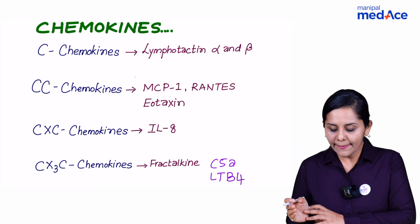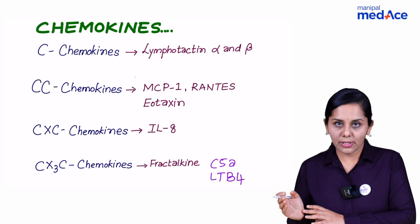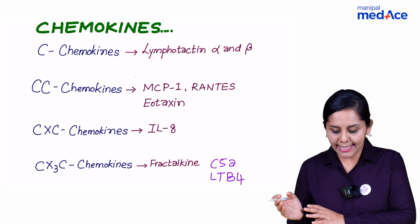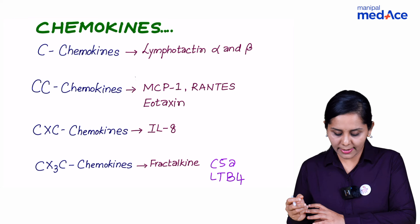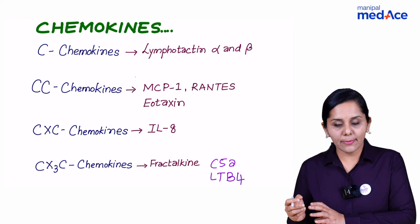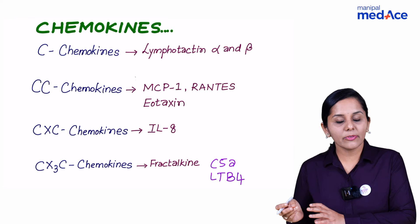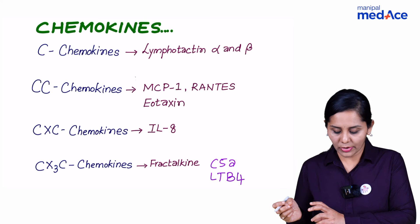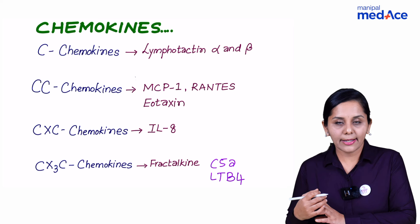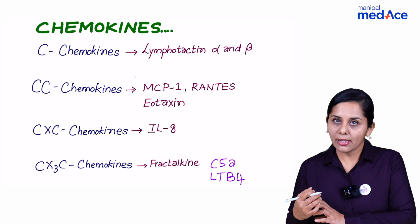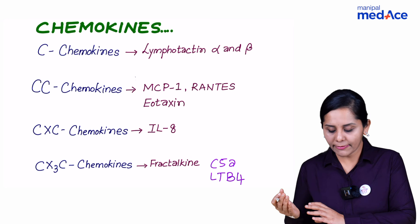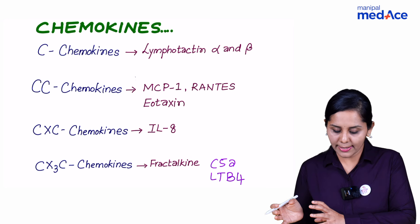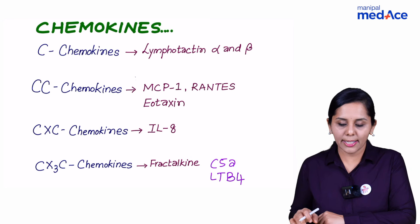Remember the examples: lymphotactin alpha and beta is for the lymphocytes. CC chemokines mediate the locomotion of monocytes and eosinophils. CXC chemokines in the form of interleukin-8 mainly attracts neutrophils, and fractalkine is the largest chemokine. Other than this, we have C5A and leukotriene B4 as important chemokines.